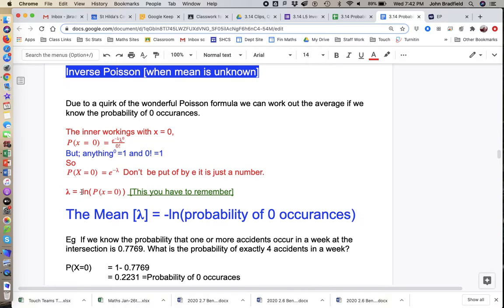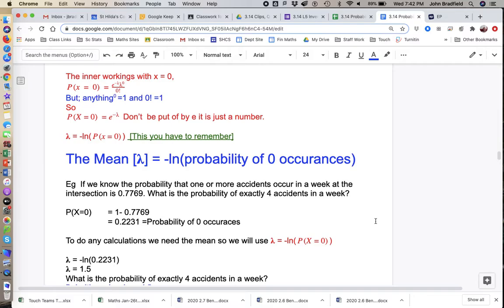We undo e with a thing called the natural log, which is a logarithm of e. Not really your worry in the course, but what we do is we take the negative of the natural log of that probability. So this pumped up looking line in blue is the thing we need. The mean will equal the negative of the natural log of the probability of zero occurrences.